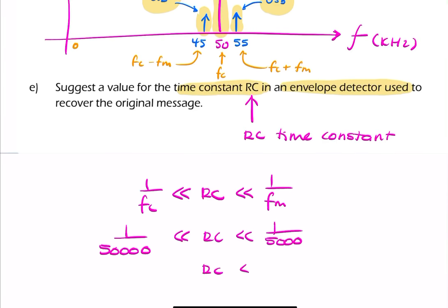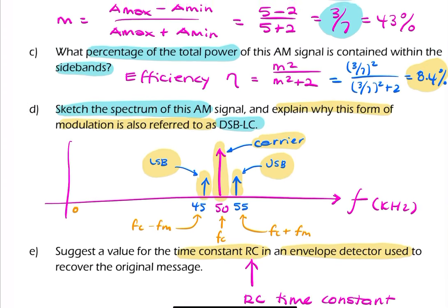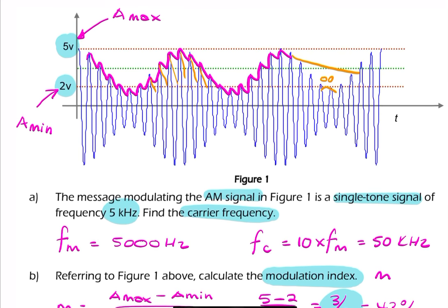So you end up with RC being something between 1 over 5,000 is 0.2 seconds, and 1 over 50,000 is 0.02 seconds. So choose anything suitably far away from these two limits. So say RC is something like 0.1 seconds, or 0.05 seconds, that should be fine. So the question isn't asking for component values, but it's asking for a time constant. And this is a suitable time constant, limited by my carrier frequency and message frequency. So that's the final answer for part E, relating to an AM signal and an envelope detector.